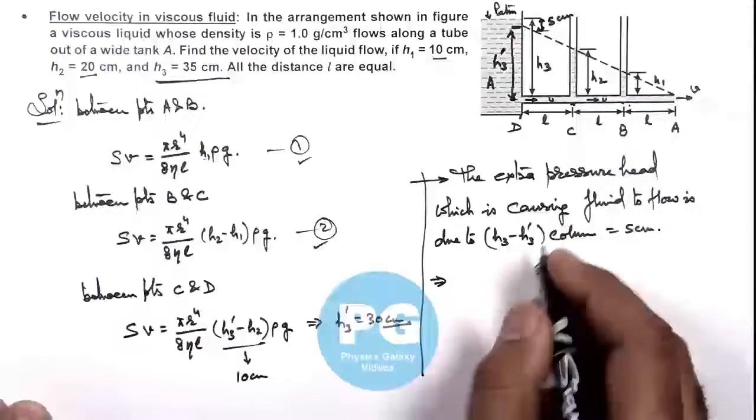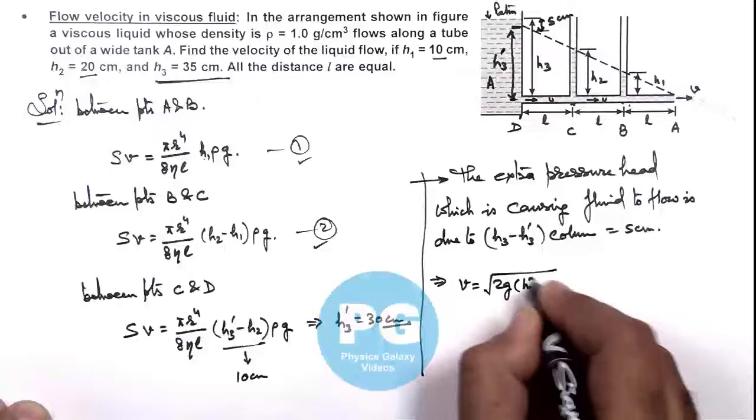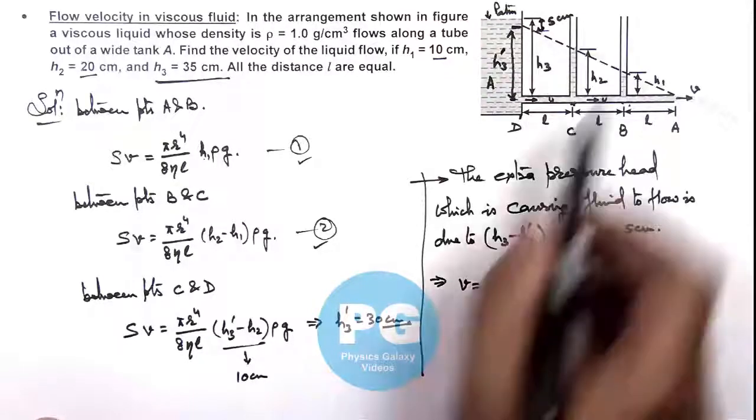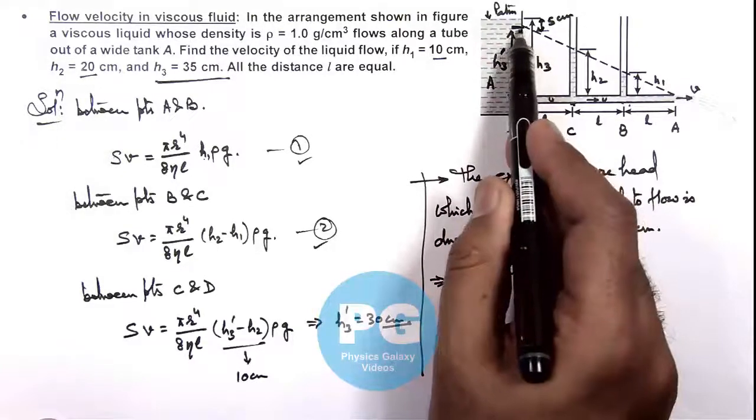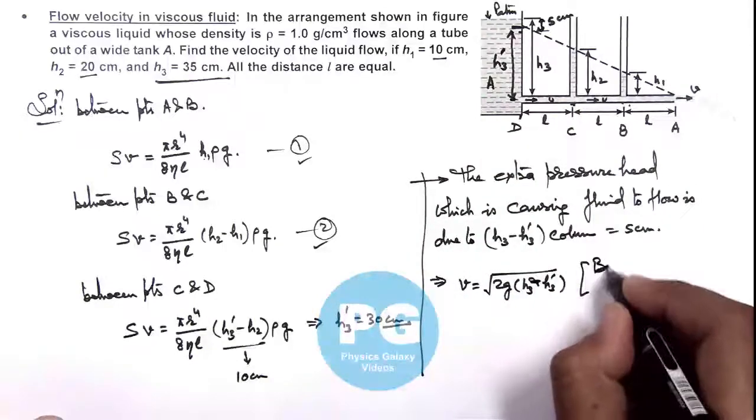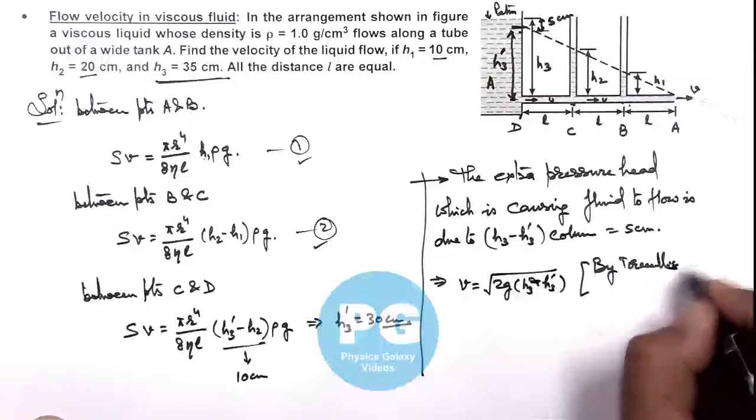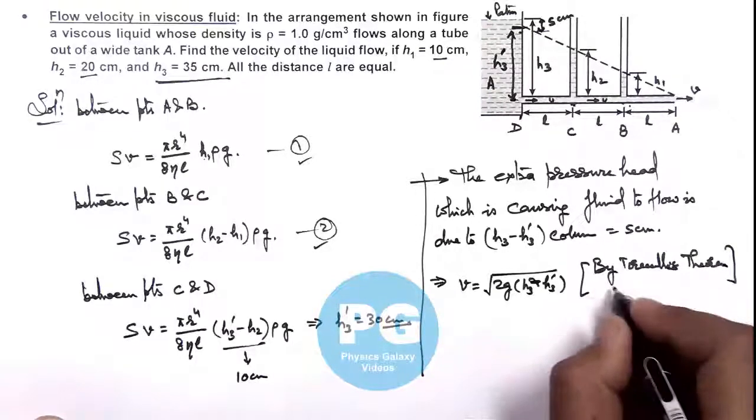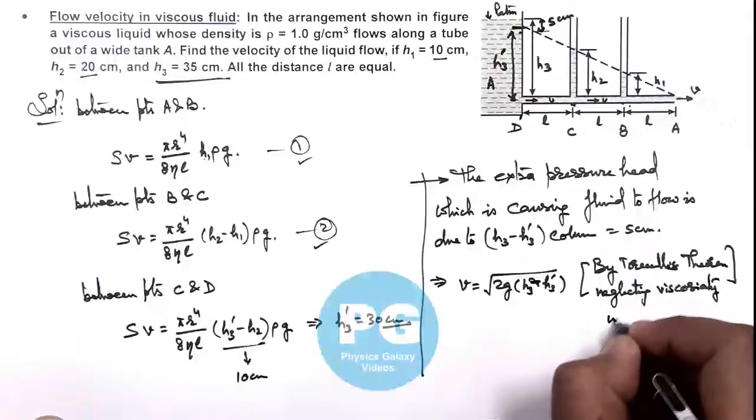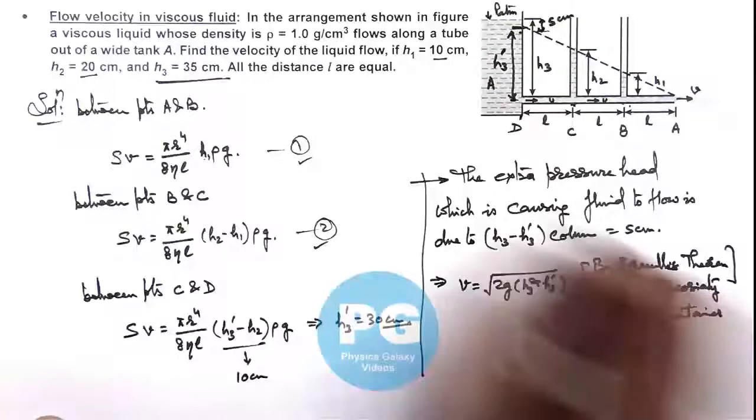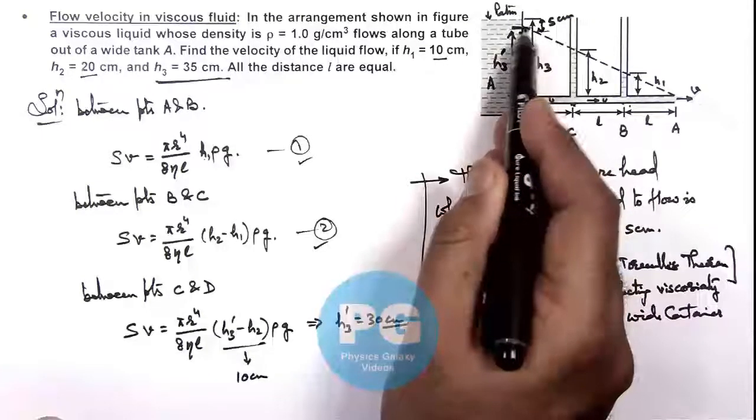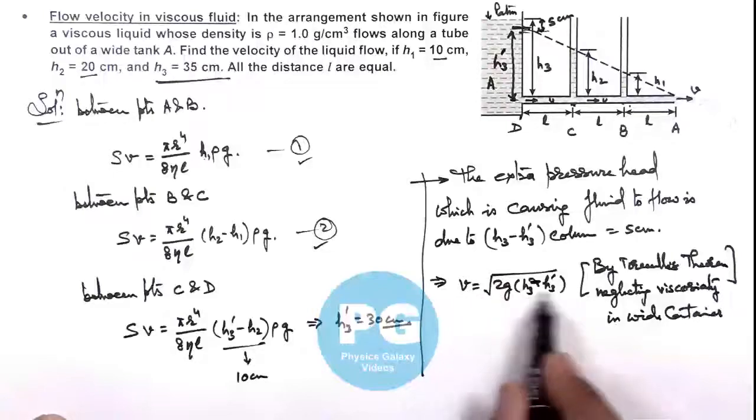This implies the flow velocity will be v equals √(2g(h3 - h3 prime)). How we are calculating this? You can apply Bernoulli's theorem. If the system is not there and there is a small hole created over here, then the flow velocity which is produced by this velocity head will be simply by Torricelli's theorem. We can write by Torricelli's theorem, neglecting viscosity in wide container. Here within this container we can neglect the velocity as the container is very wide, so flow velocity here is very low. So the velocity with which liquid will come out from this point is √(2g(h3 - h3 prime)).